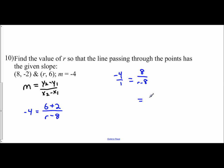So 1 times 8 is 8, and then I'm going to do negative 4 times r minus 8. So that means I'm going to have to distribute, negative 4r plus 32 equals 8. Subtract 32, and when you subtract 32 you are going to get negative 4r equals negative 24. And so r equals 6.